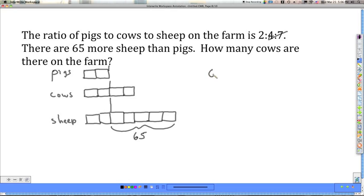So I want to do 65 divided by 5 to find out what is in each one of those units. So 10 times 5 is 50, 15, each unit is 13.